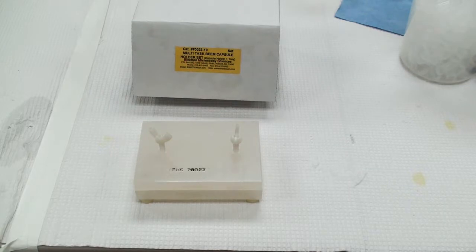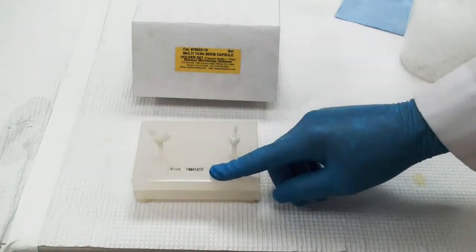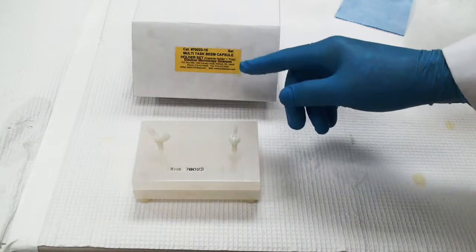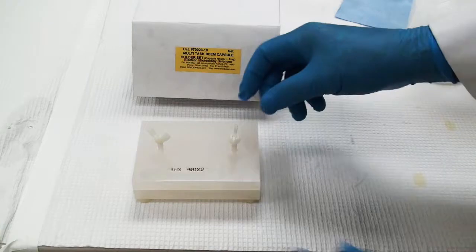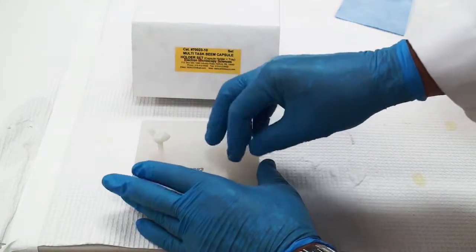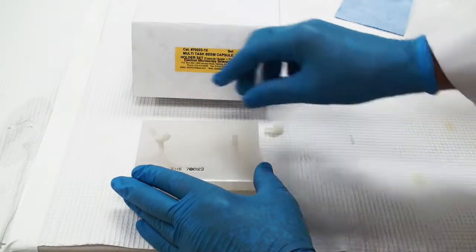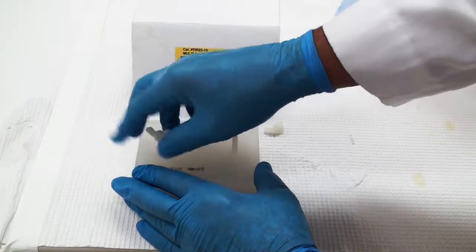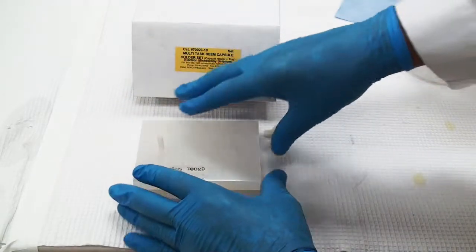To get started, we're going to take a look at the multi-task embedment for polymerization of epoxy resin. You can use it in a regular oven as well, but I use it for our rapid polymerization. In this step, we'll be able to do our full polymerization in 3 hours. We simply take the top of it off, and let's take a look at the inside of it.